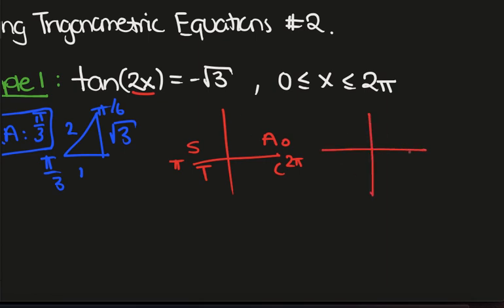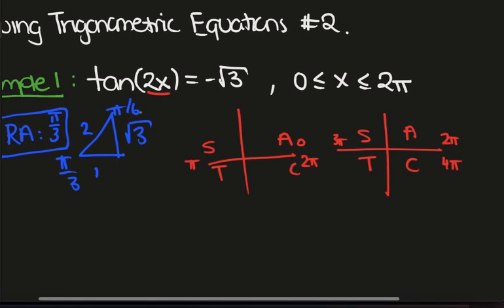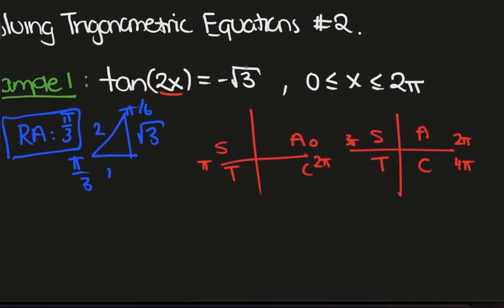Since there's a 2, what we'll do is go all the way up to 4 pi. So we'll have 2 pi, 3 pi and then 4 pi. We still have all students talk crap. Now tan is negative here, so that's this quadrant and this quadrant and that one and that one.